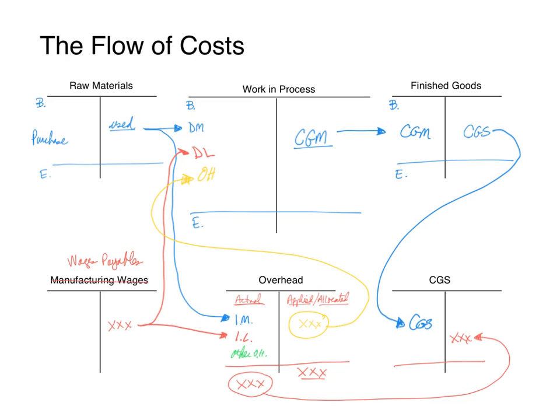Later in this chapter, we're going to learn how to allocate that overhead balance to multiple T-accounts. But for now, just note that any balance we're going to move to the cost of goods sold T-account.